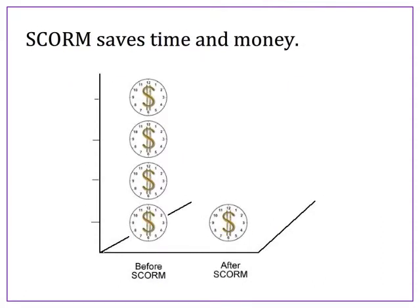In the long run, SCORM saves time and money by making sure everyone follows the same standards. Here's a simple analogy: when you play a DVD movie in your home DVD player, you expect it to work without having to purchase more equipment or adjust the settings. Similarly, SCORM saves time and money by making integration of content seamless and ensuring your materials work with everyone else's systems.